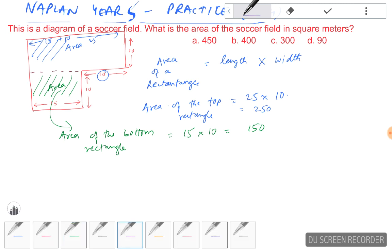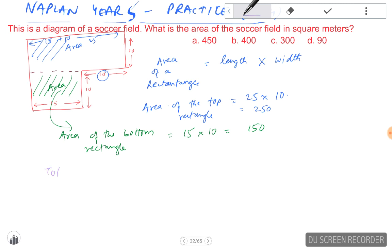Now in order to calculate the total area of the soccer field, we need to add this figure and this figure - we need to add them together. So we simply add these two: 250 plus 150, which should give us 400 square meters.